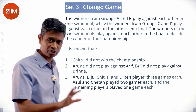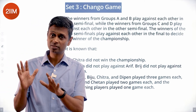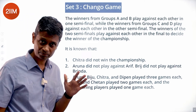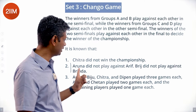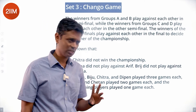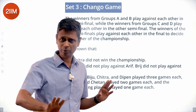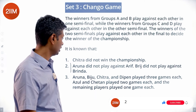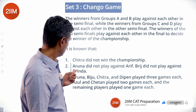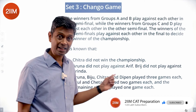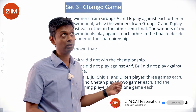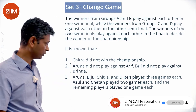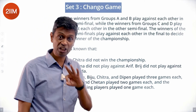It is known that Chitra did not win the championship. Aruna did not play against Arif. Bridge did not play against Brinda. The clue that Aruna didn't play Arif doesn't strongly constrain us — Aruna could have been ranked number one, and Arif could have played Azul and lost.